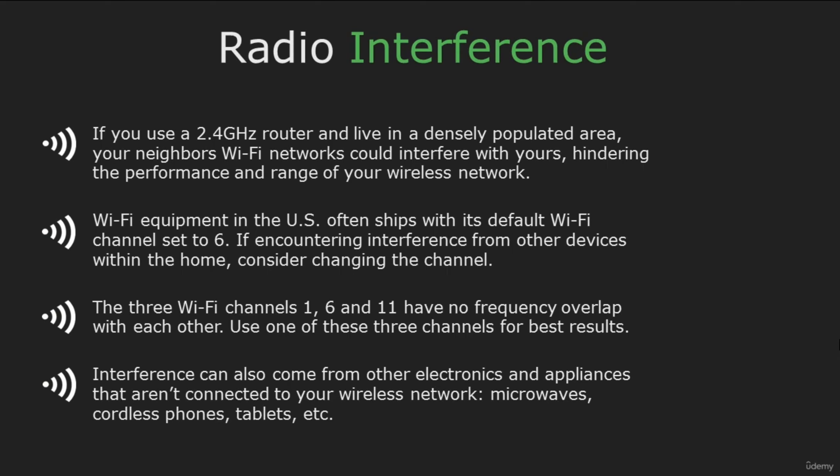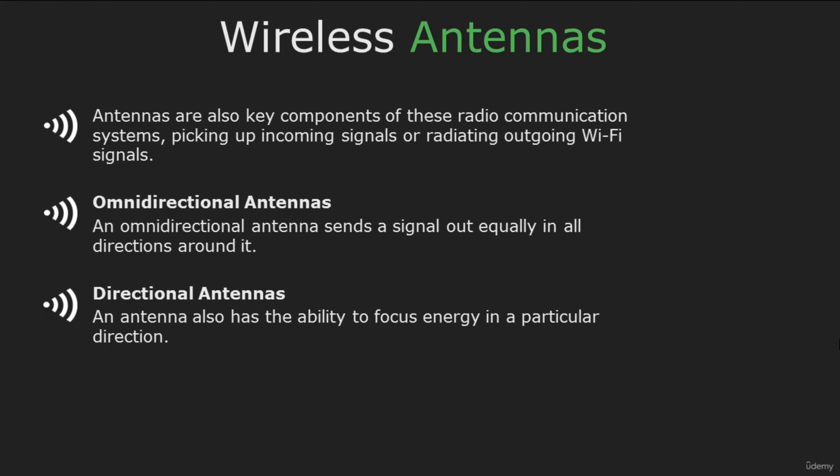The last topic I want to cover in this video is wireless antennas. Antennas are also key components of radio communication systems. There are two types: omnidirectional and directional. An omnidirectional antenna sends a signal out equally in all directions. A directional antenna sends a signal out in one direction. Now that you have a basic theoretical understanding of wireless networks, we are ready to move on to my next video where I will show you useful wireless settings.